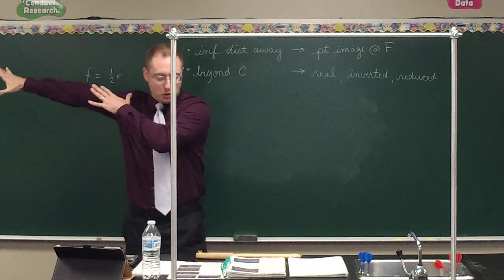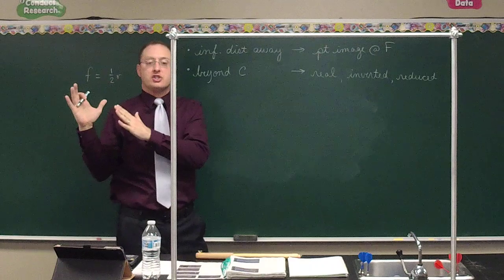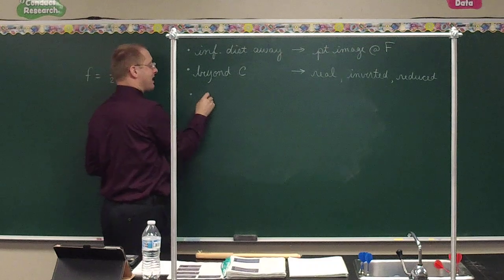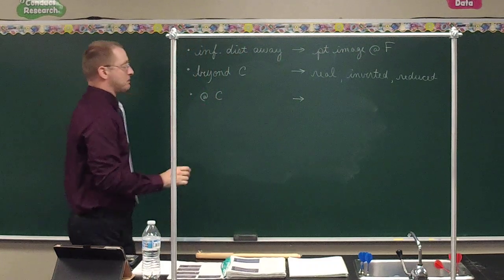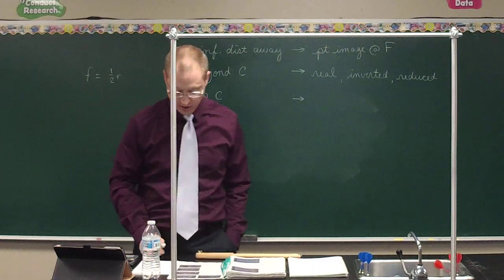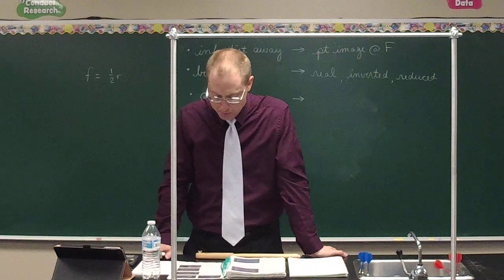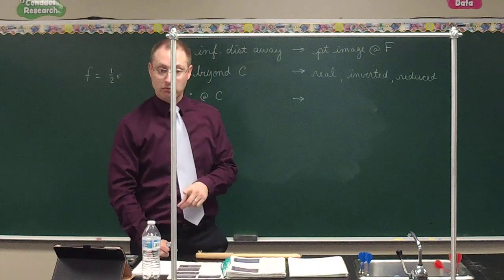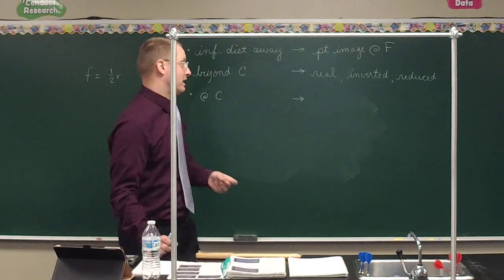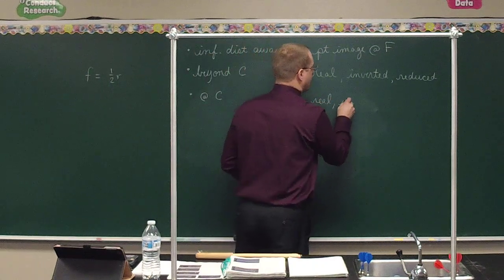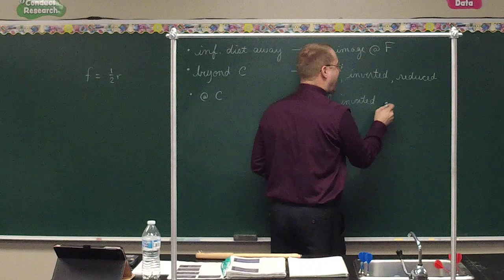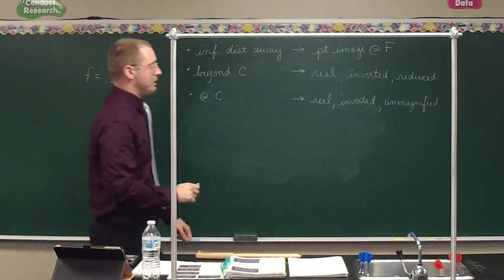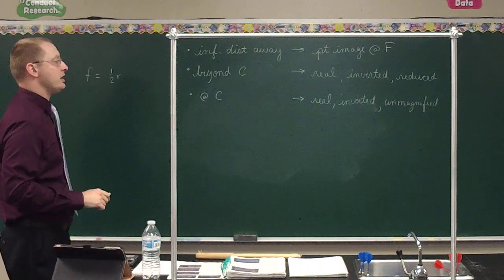We started at infinite distance, moved closer but still behind C. Case 3: what if the object is placed exactly at the center of curvature? Looking at the ray diagram, compare the image to the object — they're the same size. The image is still upside down and formed by converging light rays. So we still have a real image, it's still inverted, but now it's unmagnified.